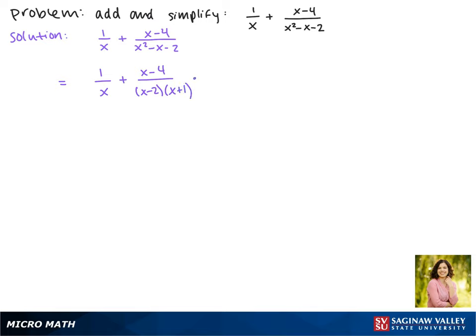Now we want to make a common denominator. Our second term needs a factor of x, so we'll multiply by x on the top and bottom. Our first term needs the factors of (x - 2) and (x + 1), so we have to multiply by that on the top and bottom.